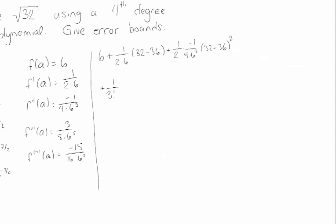1 over 3 factorial times the third derivative times (x minus a) cubed, and now for the last term we get 1 over 4 factorial times the fourth derivative times (x minus a) to the fourth.